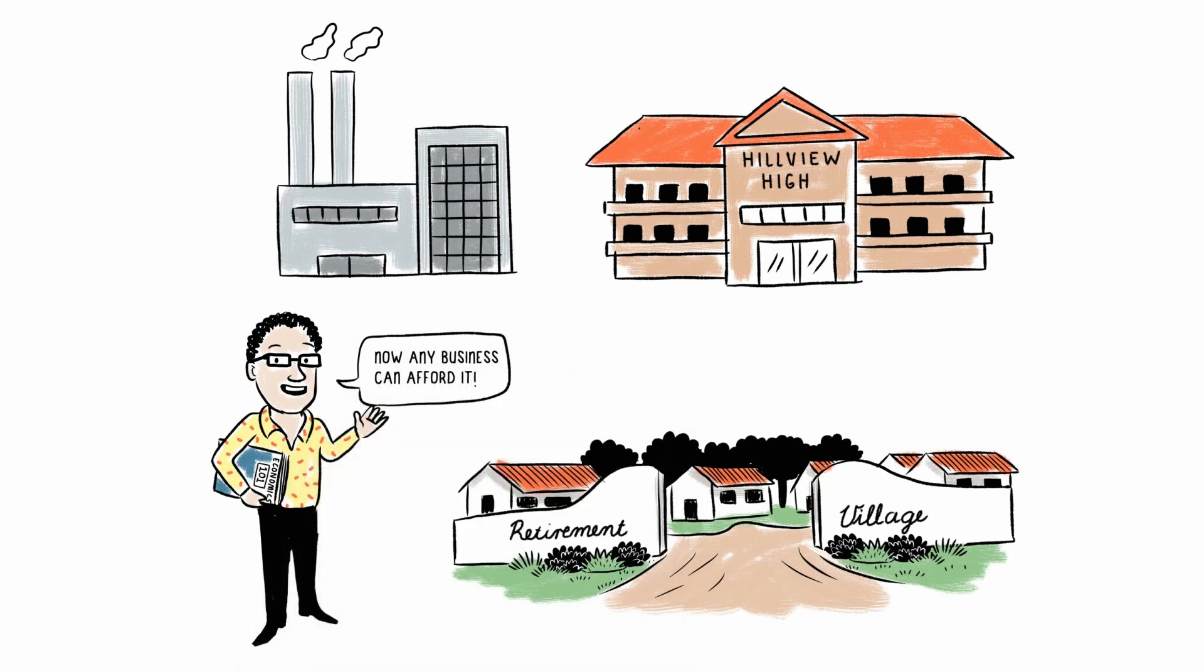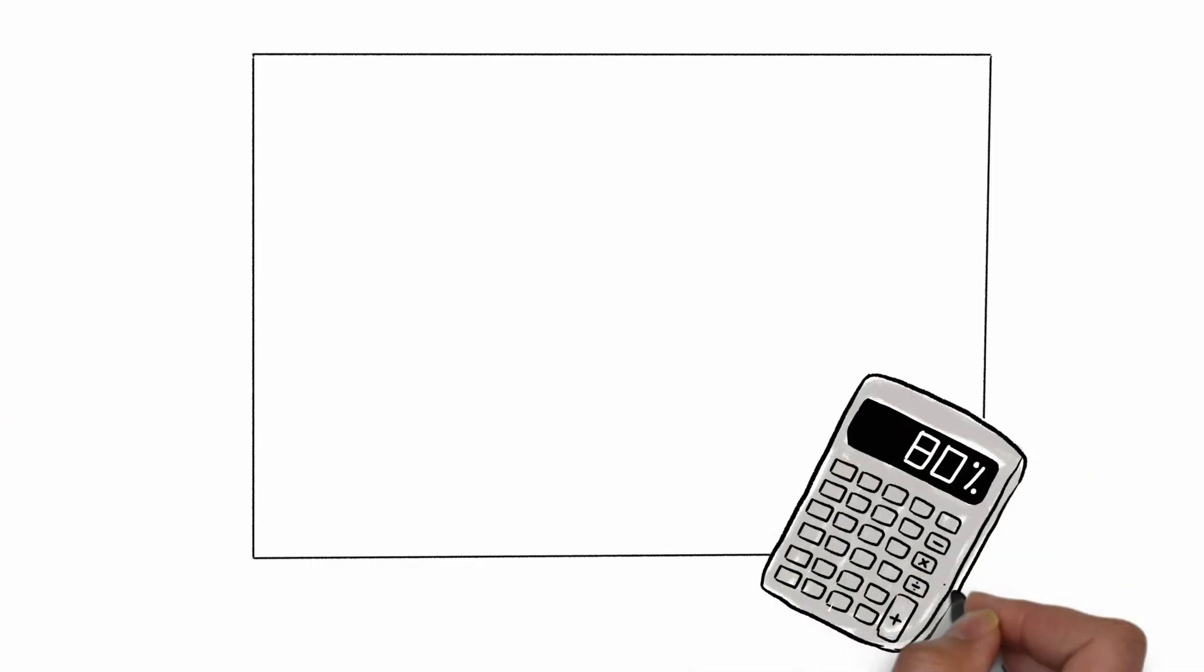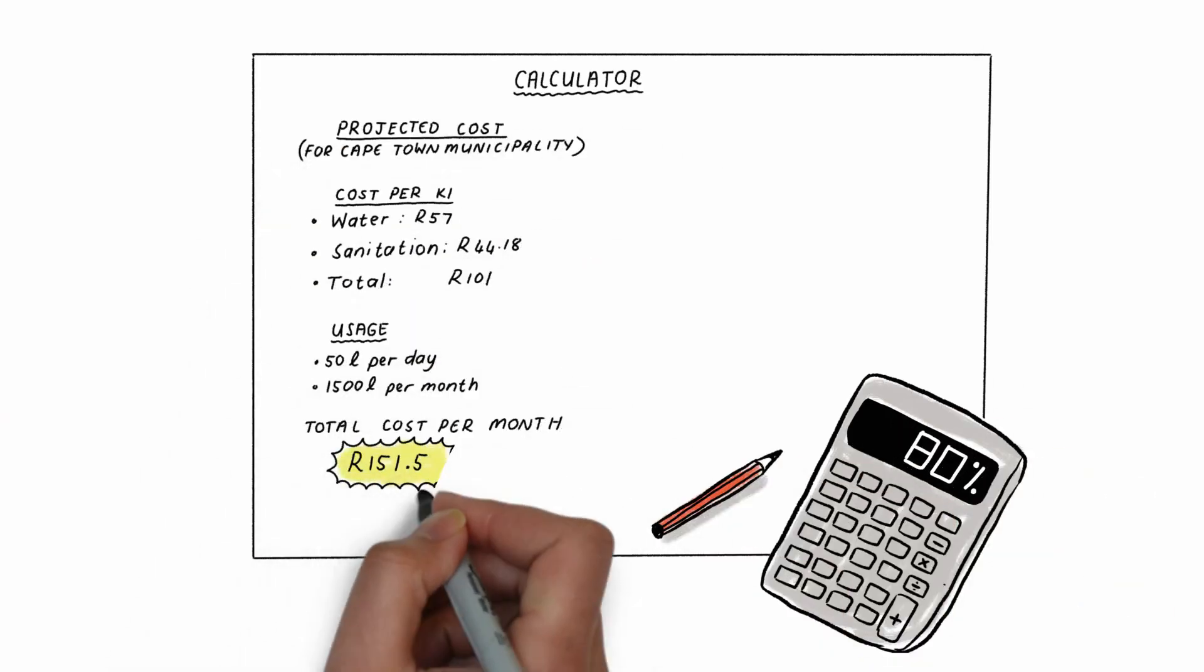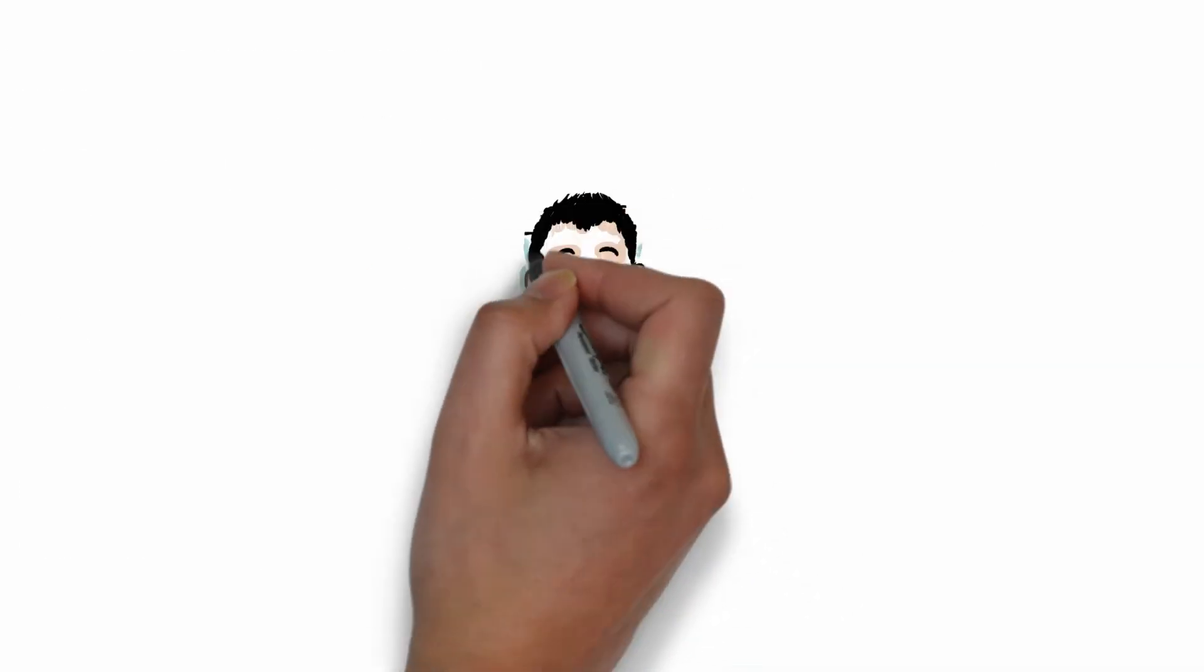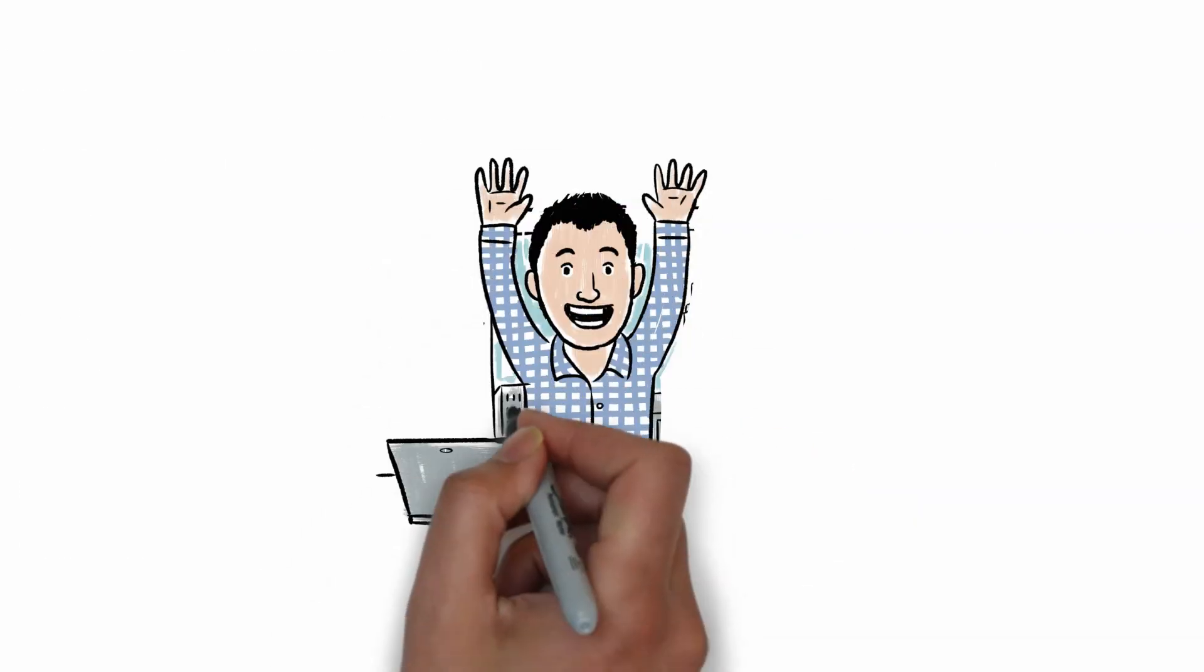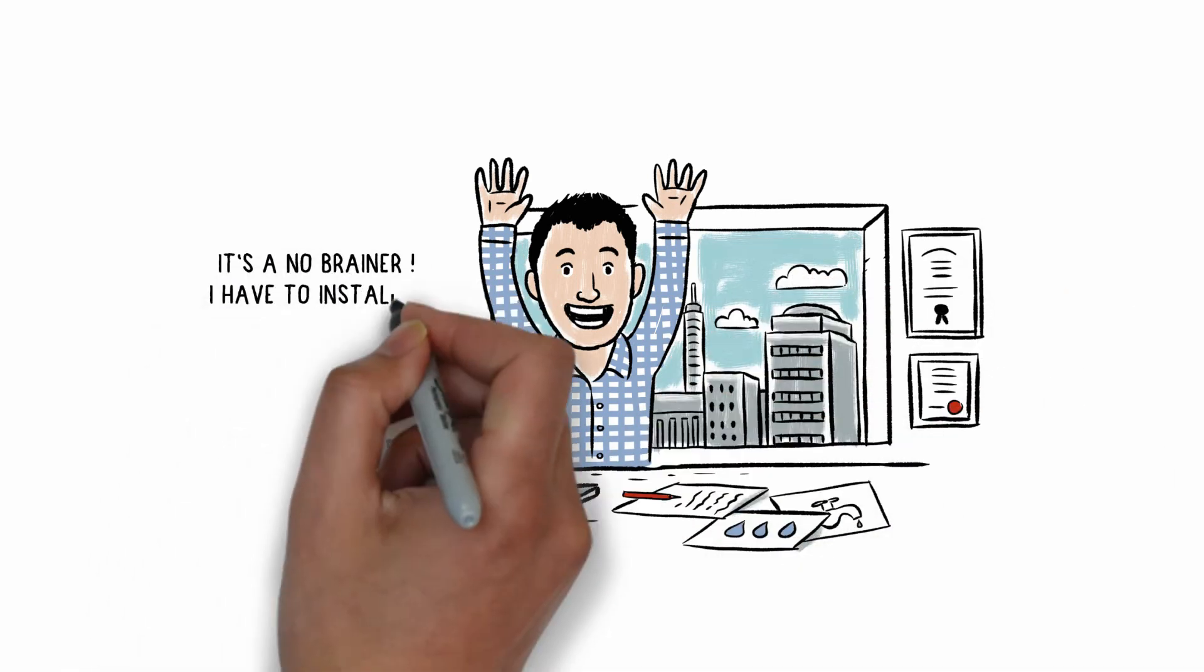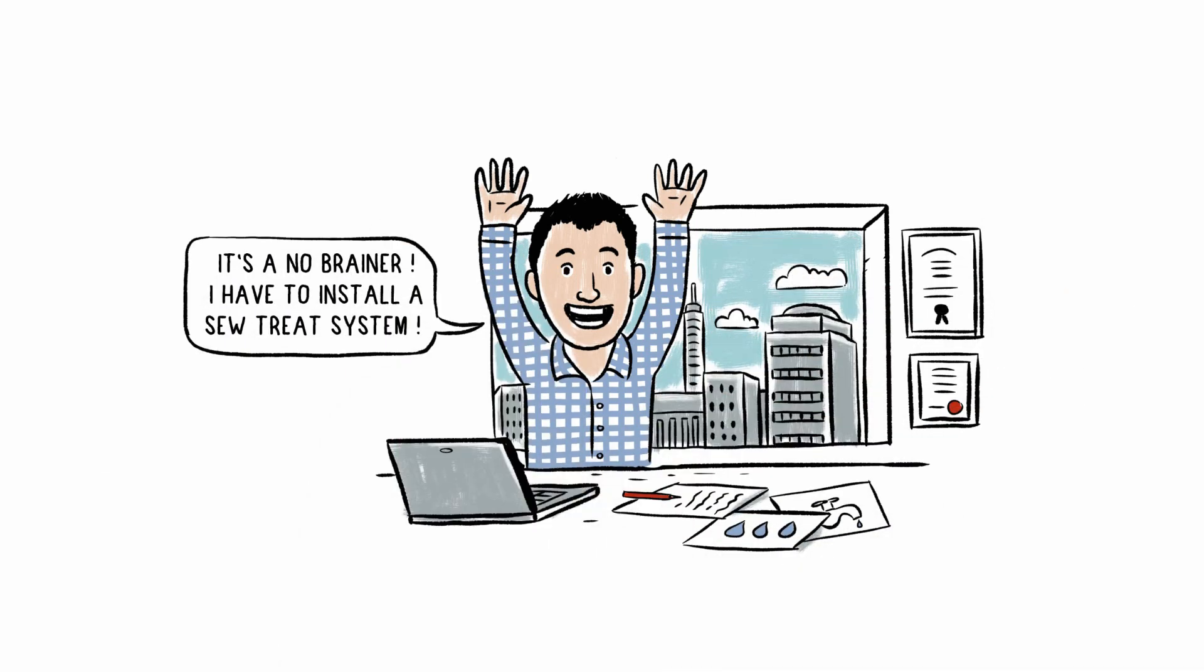Economics 101. To get an idea of how much money you can save, use our simple online calculator. By installing a Sewtreat system, you will save water, save money, and save your business. Don't hesitate to give us a call.